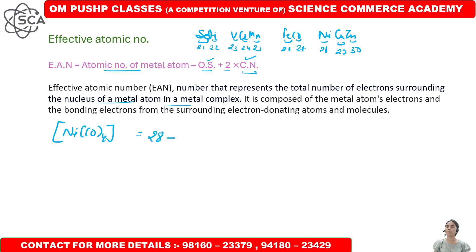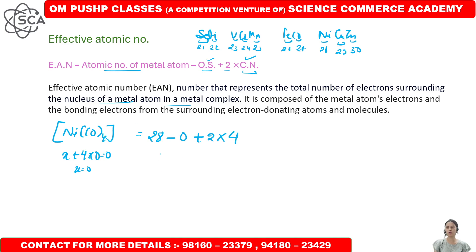What is the atomic number of nickel? That is 28. Let's calculate the oxidation state: x + 4×0 = 0, so x = 0. The coordination number of CO is 4 since it is monodentate. So EAN = 28 − 0 + 2×4 = 28 + 8 = 36. The EAN of Ni in Ni(CO)4 is 36.